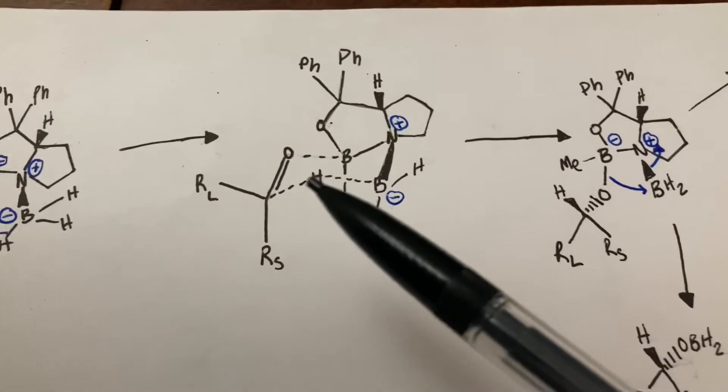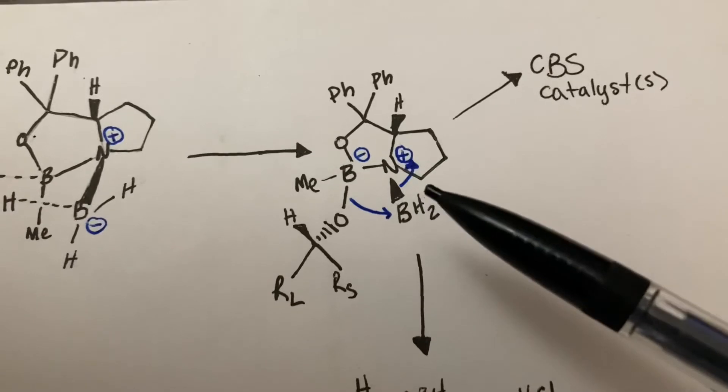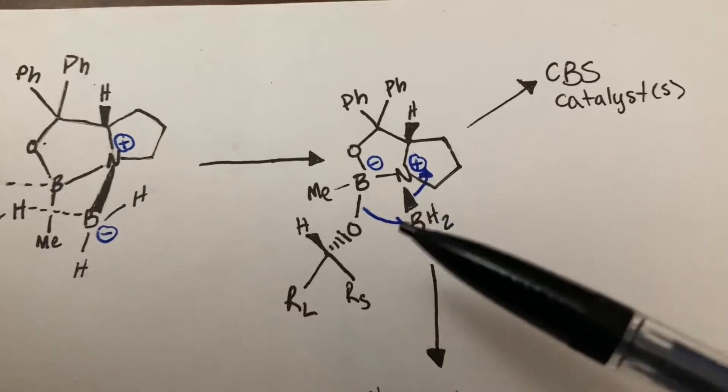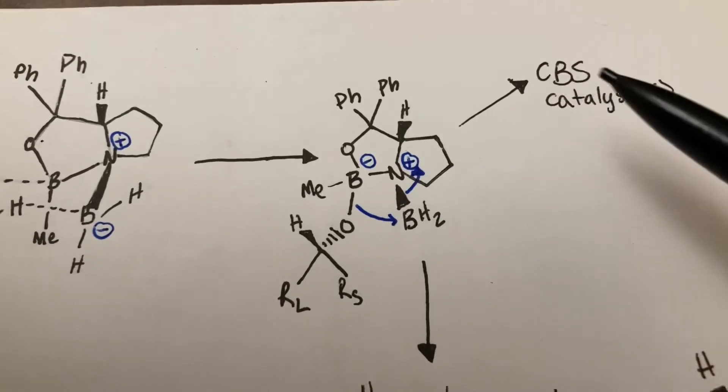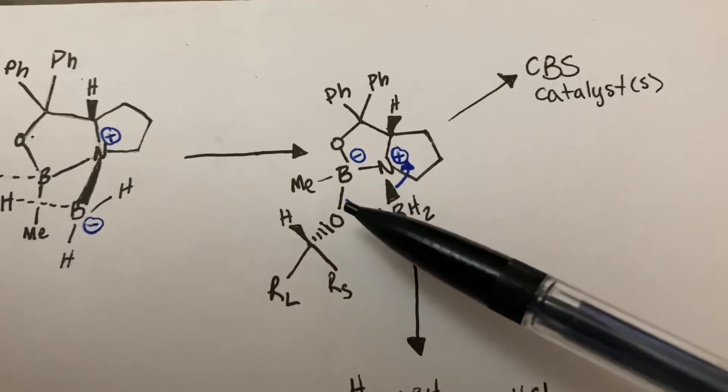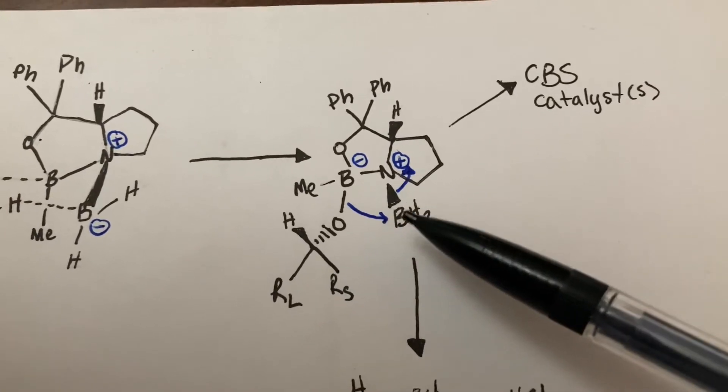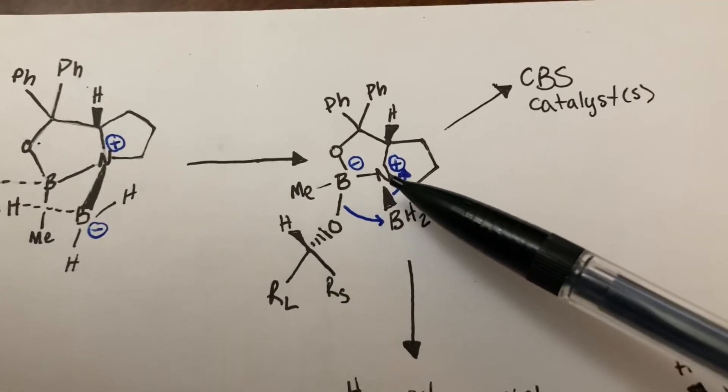So once the hydride is transferred, it will make this product, which in turn will allow for the CBS catalyst to be restored after this oxygen bonds to this boron, and this goes back to the nitrogen.